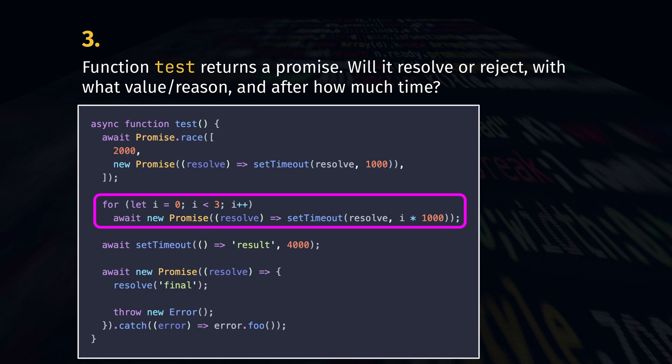The for loop: inside of async await each iteration is blocked by the await. We have three steps, so three promises to await sequentially. Based on the setTimeout values, they will resolve after 0, 1 and 2 seconds respectively. In total, 3 seconds.